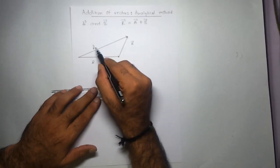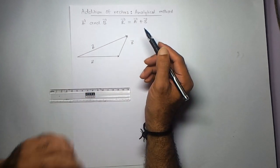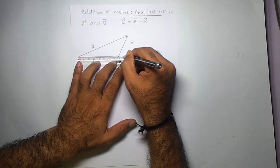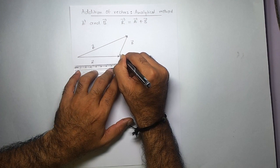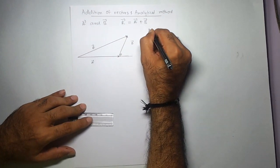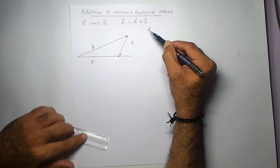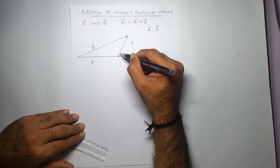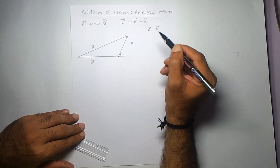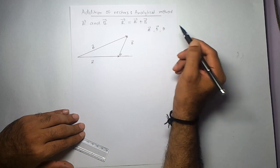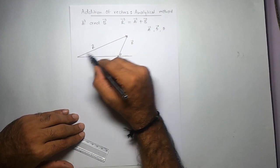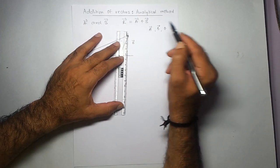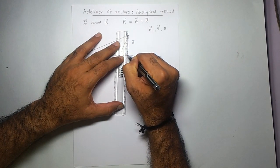I want to find out the direction and magnitude of the resultant. Let's say the angle between the two vectors A and B is theta. I know vector A — meaning I know the magnitude and direction of vector A. I also know vector B — the magnitude and direction. And I know theta, the angle between vector A and vector B. I want to find out R.